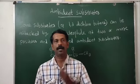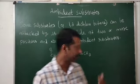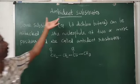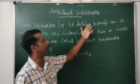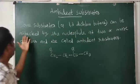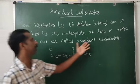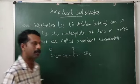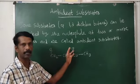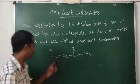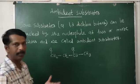Good morning. Next is ambient substrate. Last class we discussed ambient nucleophile. Now, what is an ambient substrate? From the name itself it is very clear. An ambient substrate is a substrate — for example, 1,3-dichlorobutane — that has two leaving groups: one chlorine atom and the other chlorine atom. The incoming nucleophile can attack on this position or on this position.